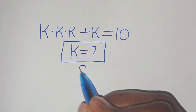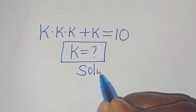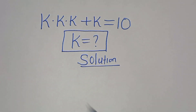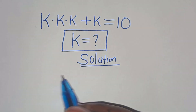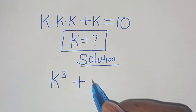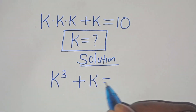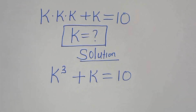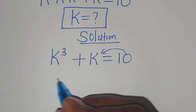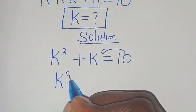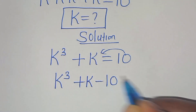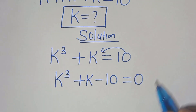Now let's provide a solution. So k times k times k is k to the power of 3, then plus k, this is equal to 10. Let's take 10 on the left hand side, so that we have k to the power of 3 plus k subtract 10, this is equal to 0.